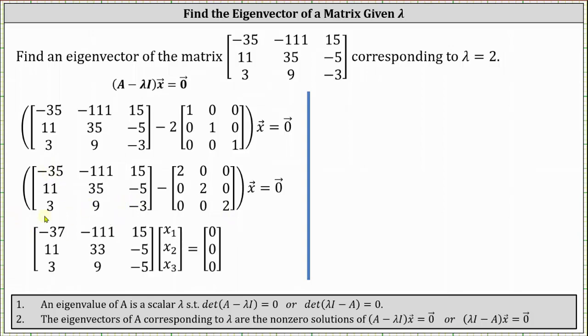The main diagonal becomes -37, 33, -5, while all other entries remain the same. I've written vector x as (x₁, x₂, x₃) and the zero vector as (0, 0, 0).